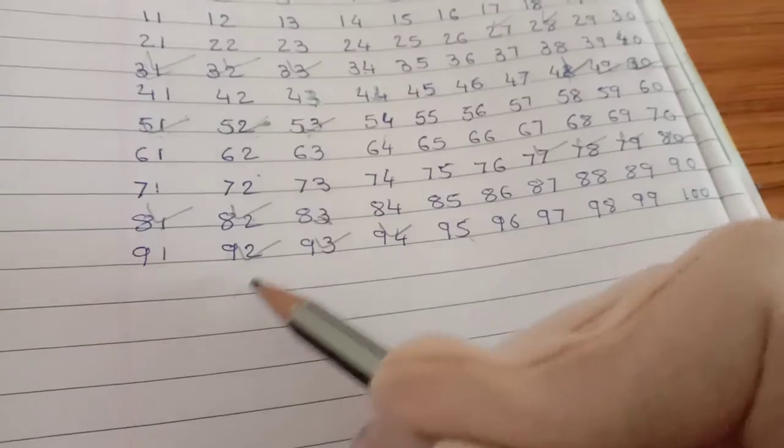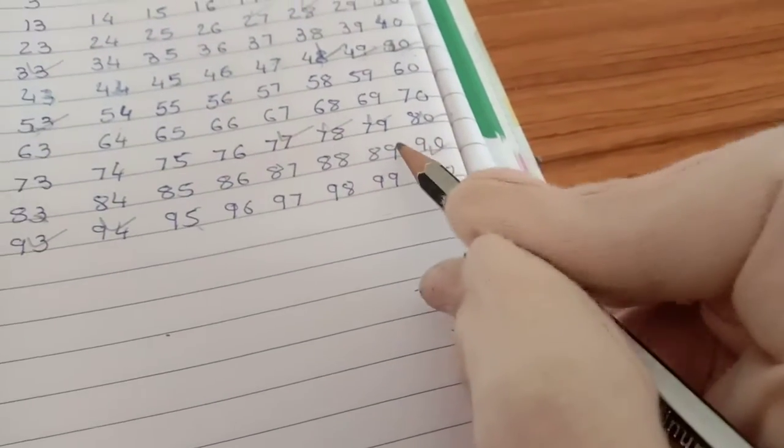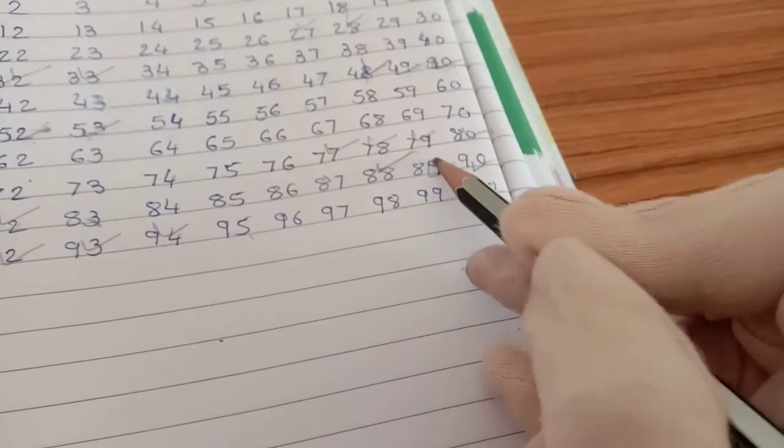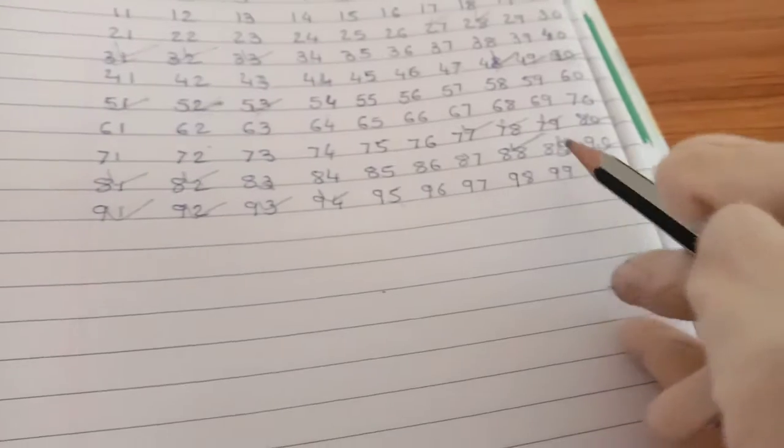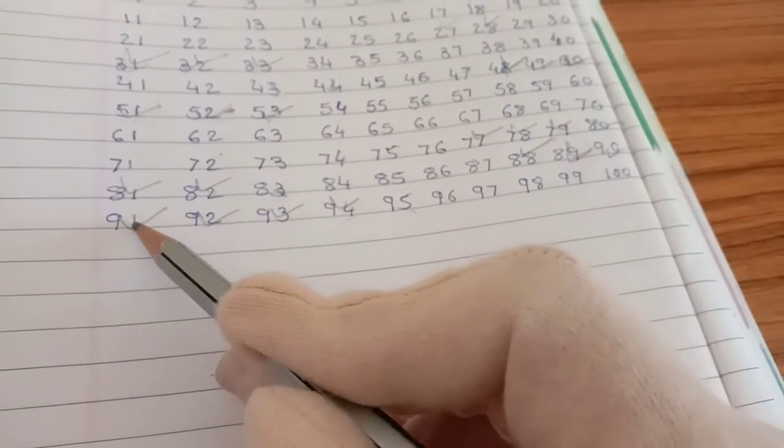91, 90, 89 and 88, okay? So we have to count this number, how many steps? 1, 2, 3, 4,